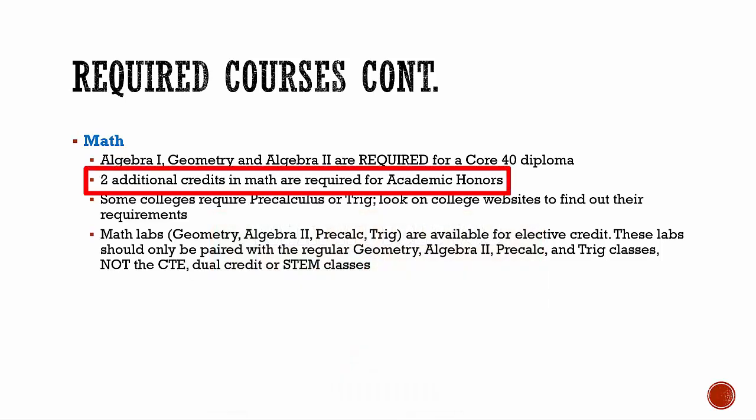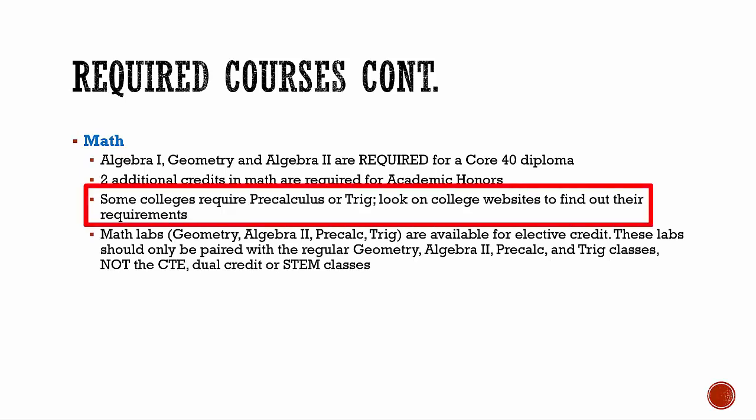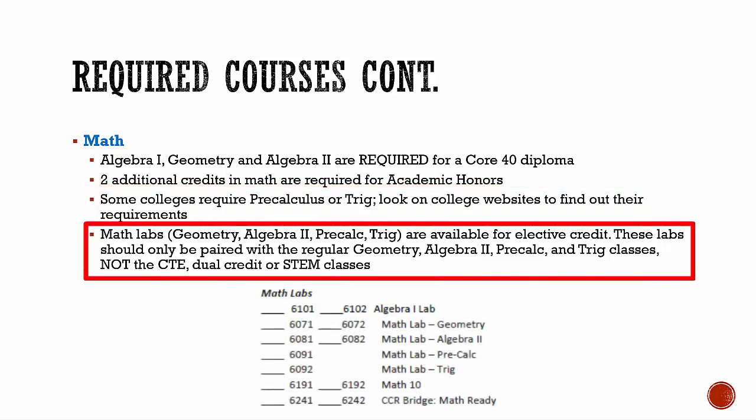For an Academic Honors diploma, you must take those same three courses plus one more year of advanced math beyond Algebra 2. When choosing that math course, think about what the college admittance requirements are for math — go to the college's website to see what they require. Some colleges just require those three years of math, but some also require pre-calc and trig on top of those three math classes. Math labs can also be taken along with your math class. If you struggle in math, we really encourage you to take a lab, as they are beneficial in helping students be successful. Check with your math teacher and see your counselor if you have any questions.